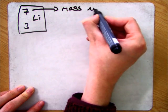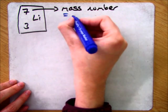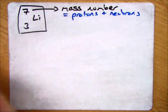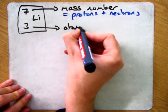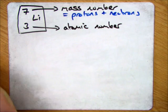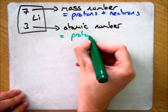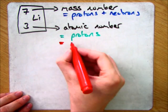You should be familiar with the two numbers on the periodic table. The top one being the mass number, which is the number of protons and neutrons added together. And then the bottom number being the atomic proton number, which tells you the number of protons and also the number of electrons.